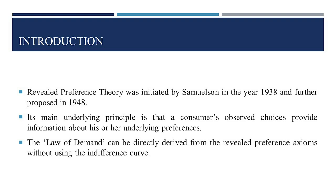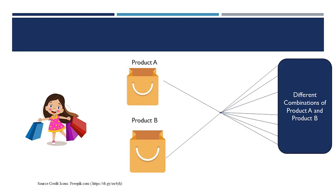The key advantage of Revealed Preference Theory is that the law of demand can be directly derived from the Revealed Preference axioms without using indifference curves and most of its restrictive assumptions. By simply observing the nature of consumer behavior in the marketplace, such as the bundle of goods a consumer buys at varied prices, is all that is required in this theory.